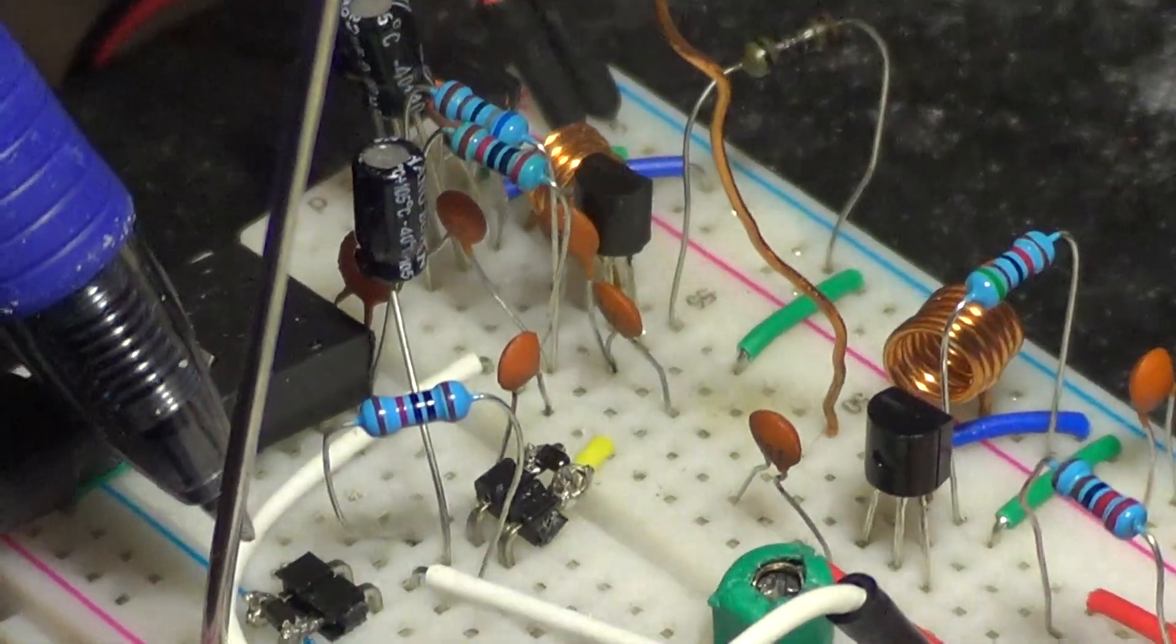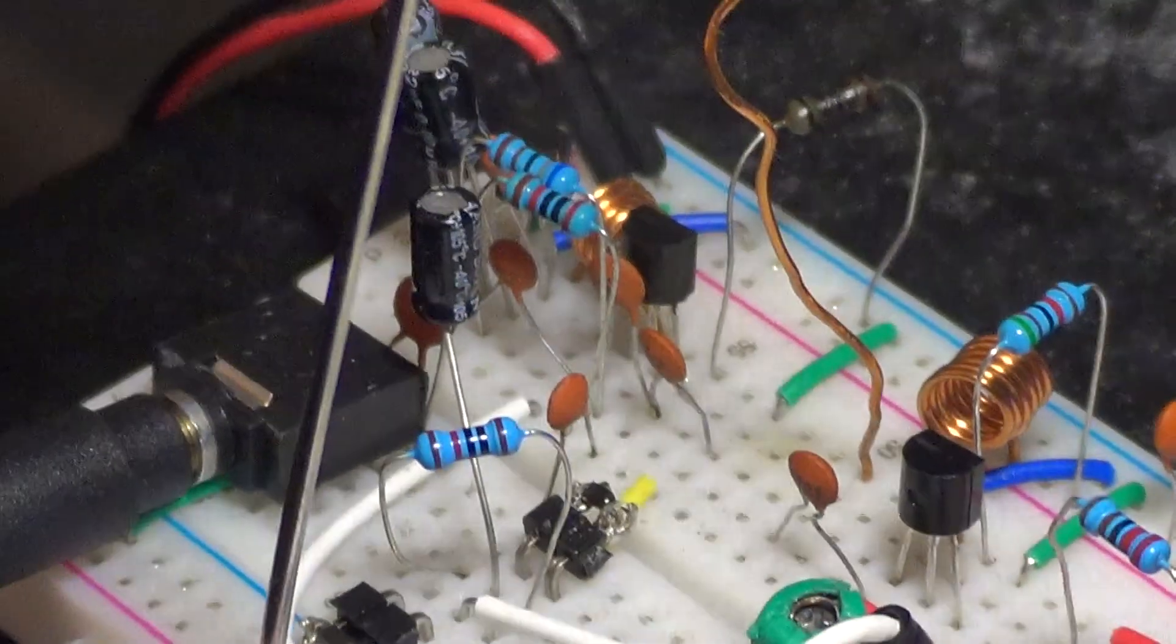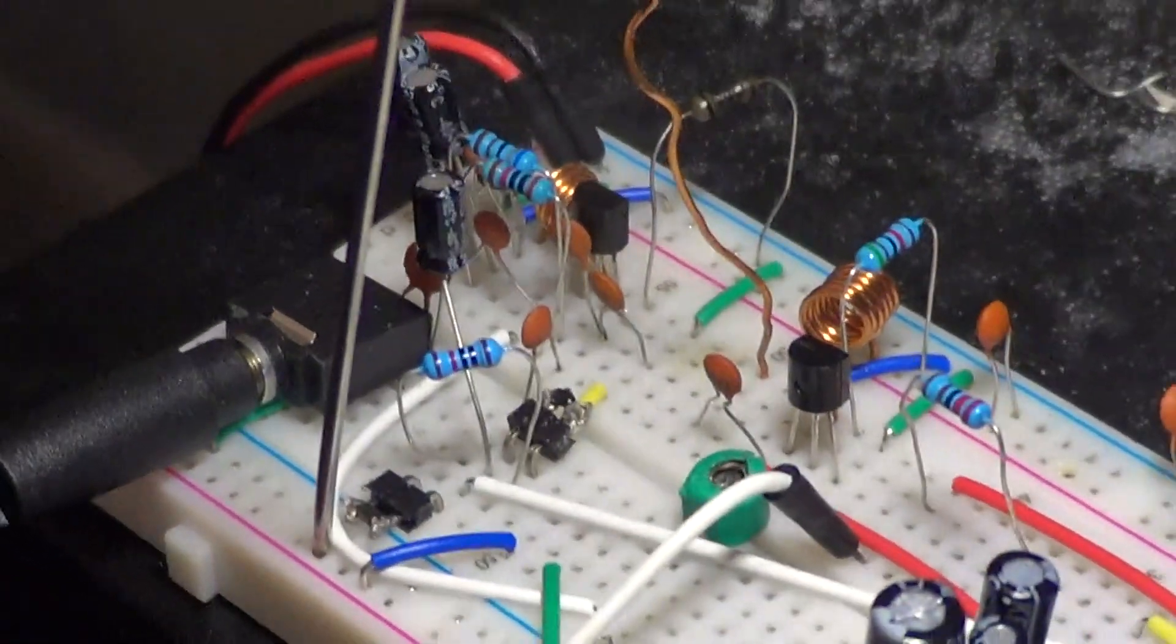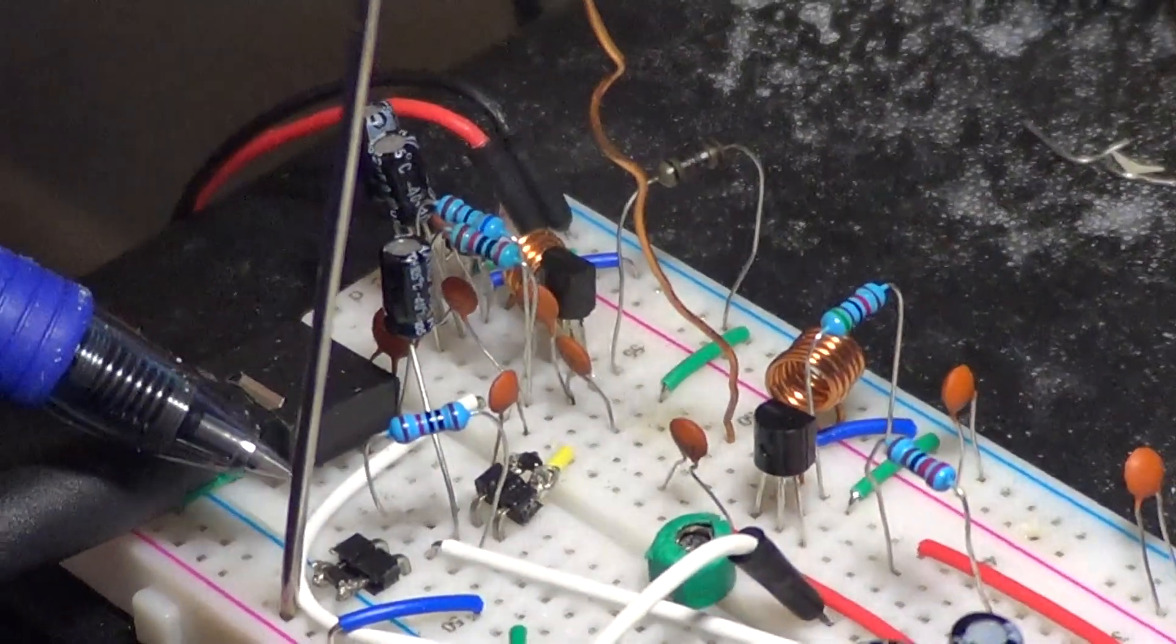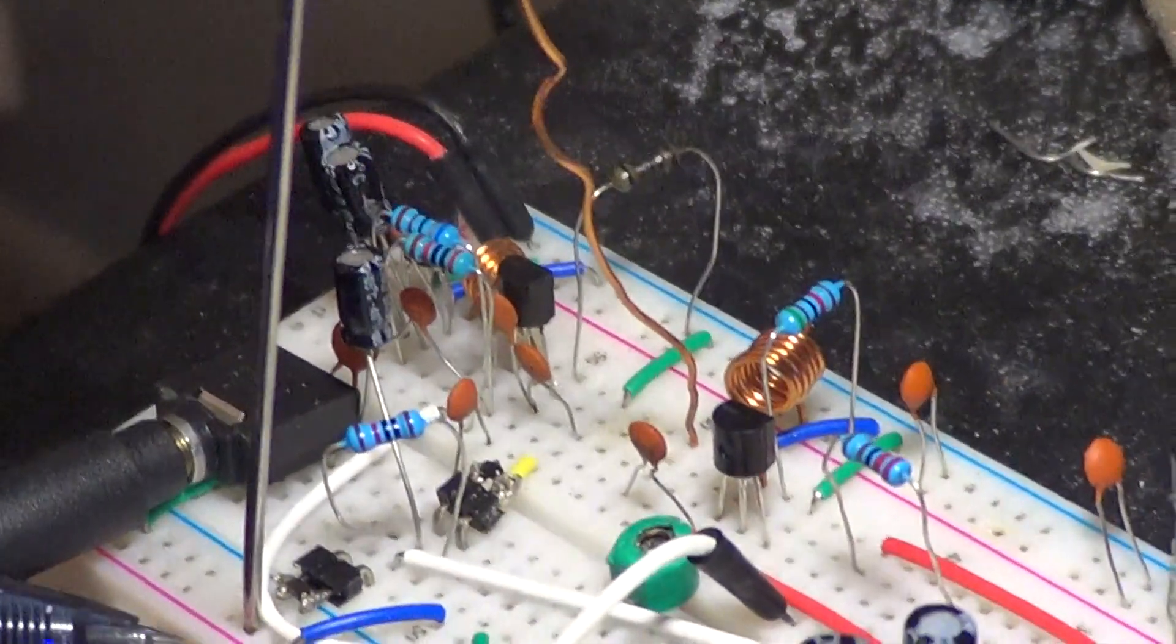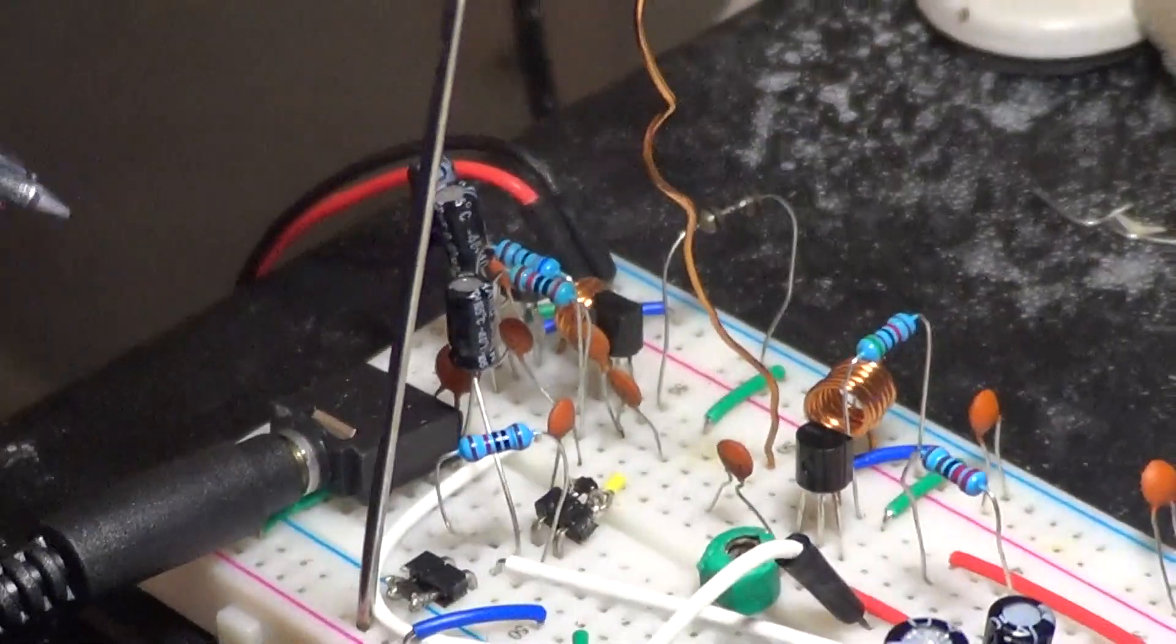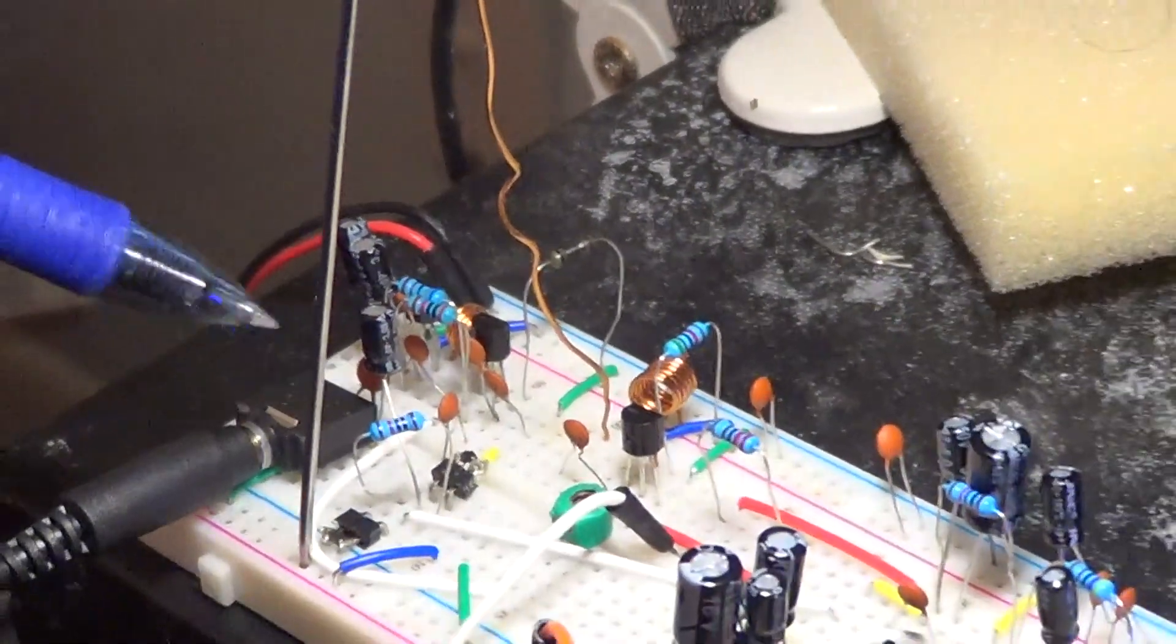That's also known as varicap or varicapacitor. And so with these, if you apply a reverse voltage into these capacitors you will change their internal capacitance. Their internal capacitance with the inductor will change the LC circuit resonance frequency therefore resulting in a different oscillation.